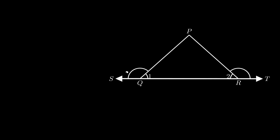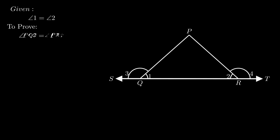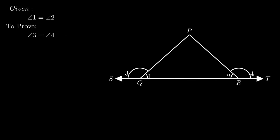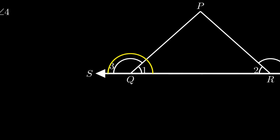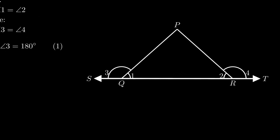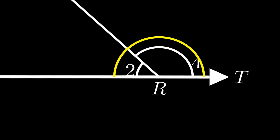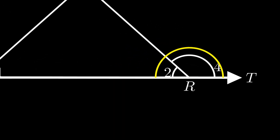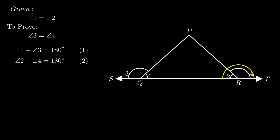Moving on to the third problem: in triangle PQR, angle PQR equals angle PRQ, that is angle 1 equals angle 2. We need to prove that angle PQS equals angle PRT, that is angle 3 equals angle 4. From the figure, the sum of angle 1 and angle 3 equals 180 degrees as adjacent angles formed on the straight line form a linear pair. Similarly, the sum of angle 2 and angle 4 also equals 180 degrees.